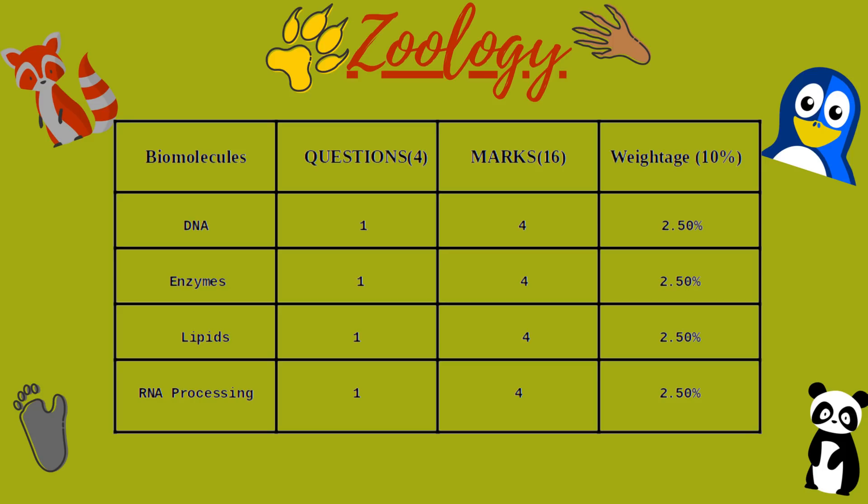The next unit carrying around 16 marks with equal weightage is Biomolecules. The unit has 4 questions and marks weightage of 16. Topics are: DNA (1 question, 4 marks), Enzymes (1 question, 4 marks), Lipids (1 question, 4 marks), and RNA Processing (1 question, 4 marks).